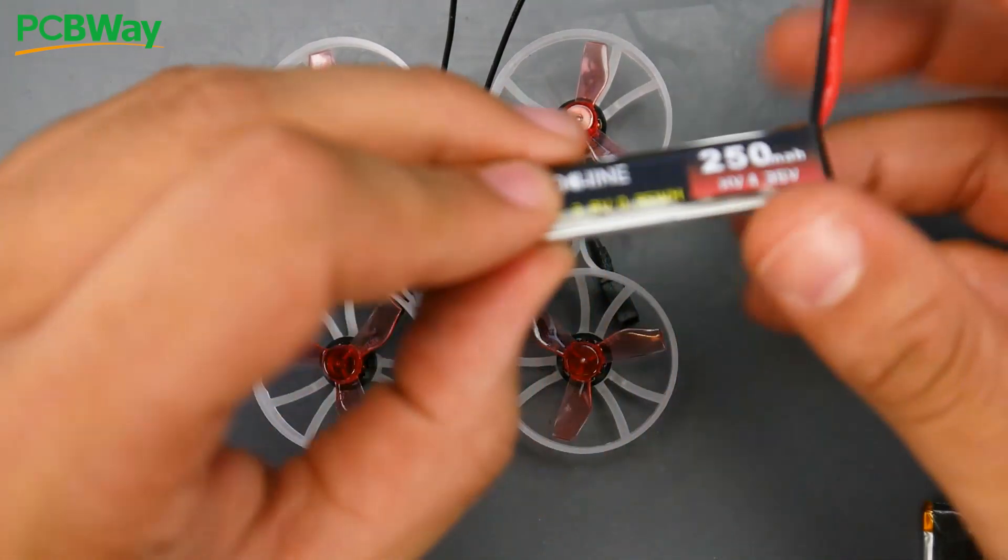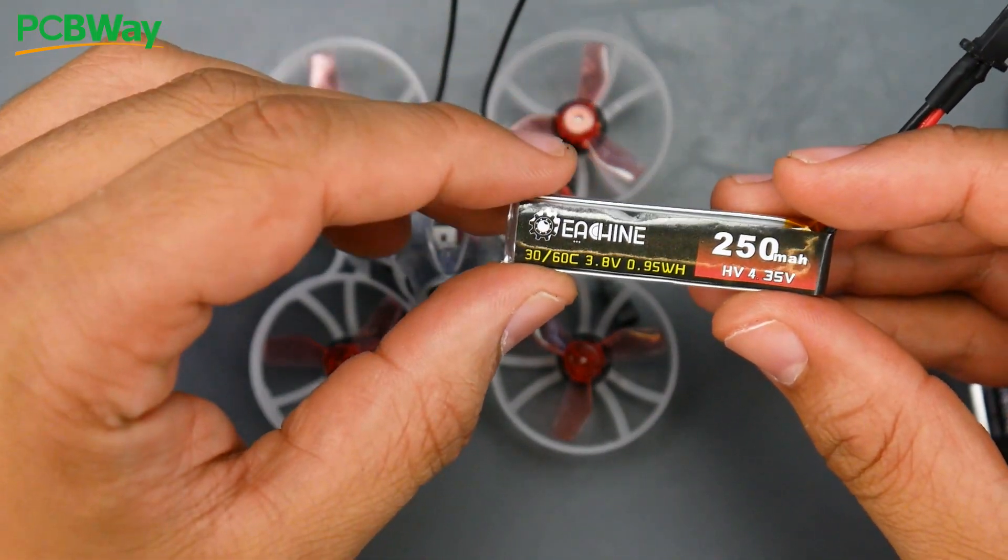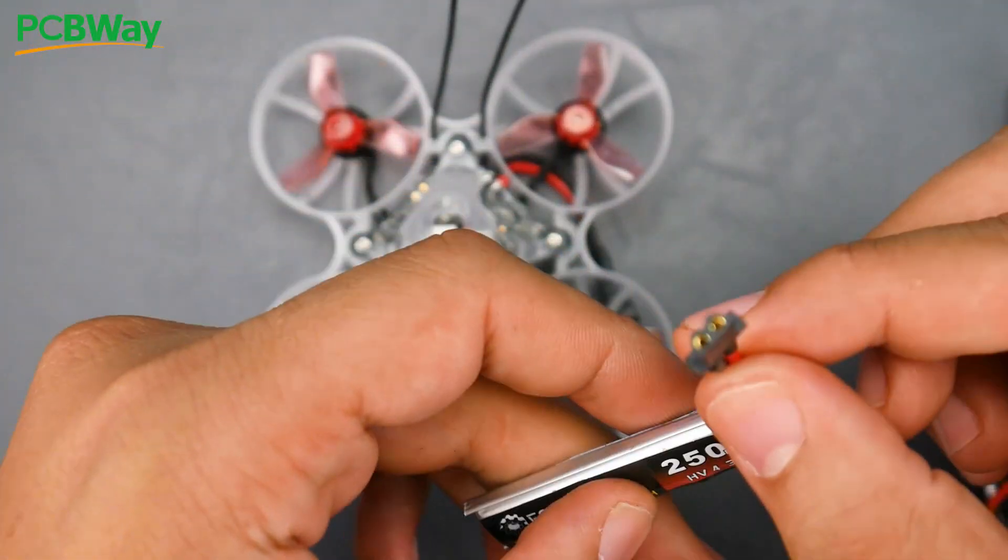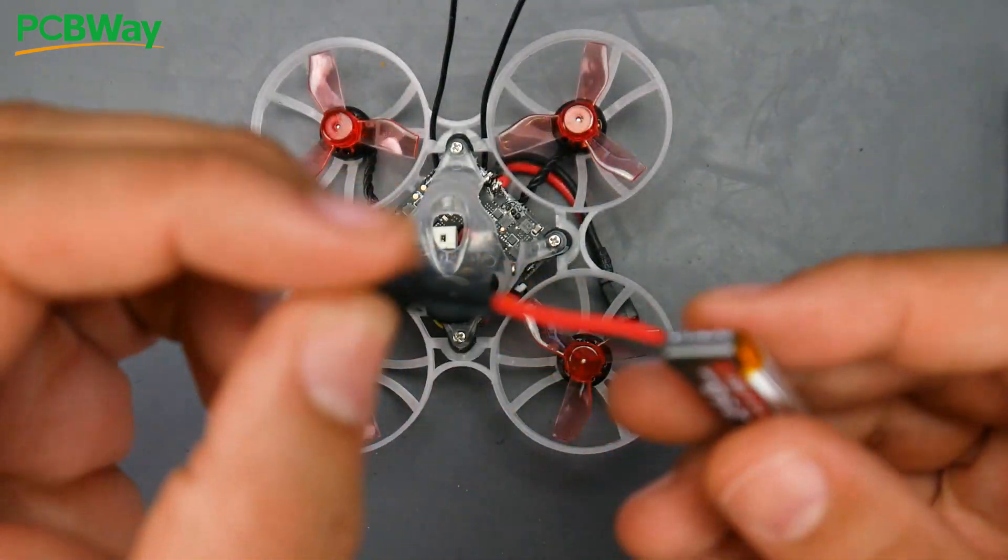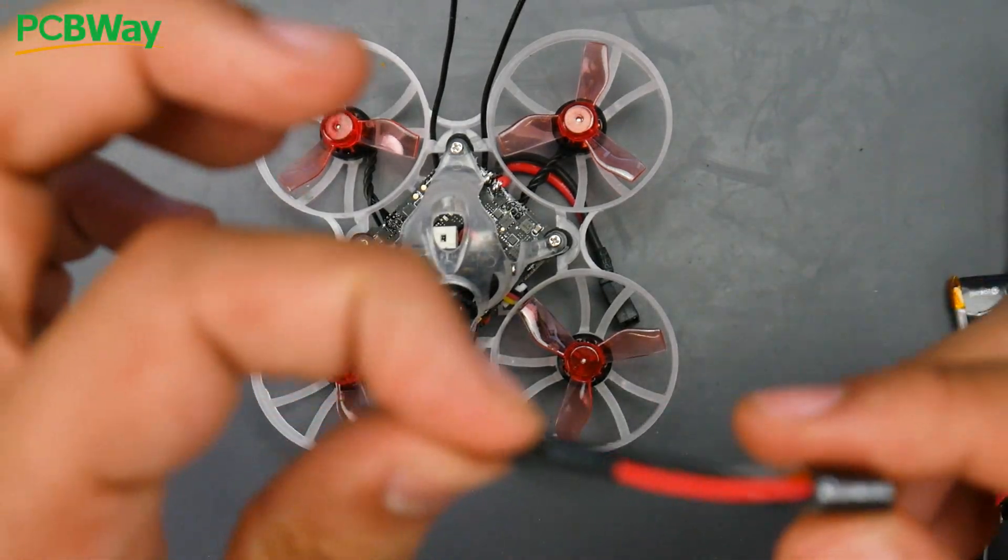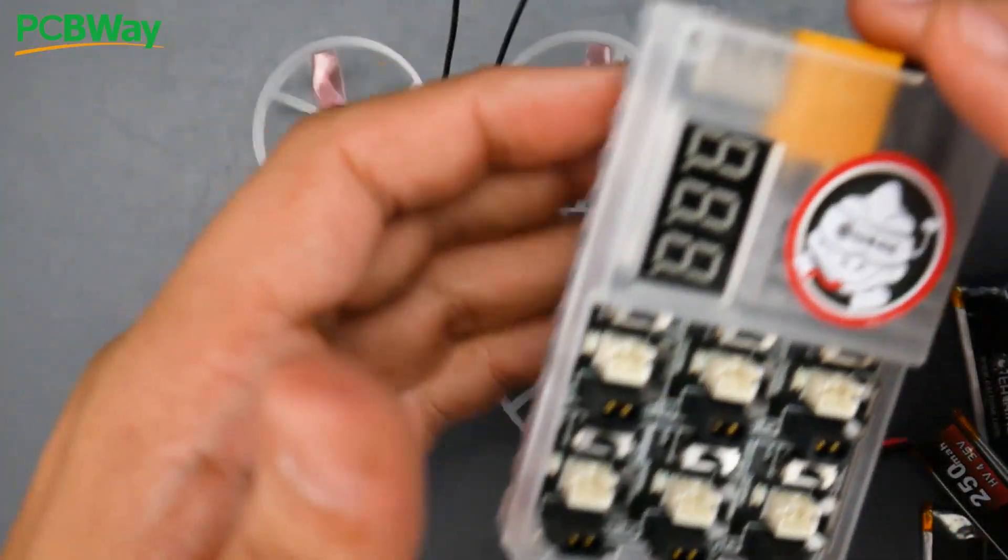For batteries they give you four batteries: 250 milliamp HV batteries with the new type of connector. We're going to be seeing this connector quite a lot, especially with Emax's new products. They're starting to give batteries with this connector, which is really nice to see.